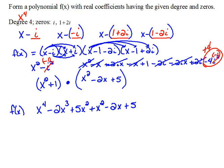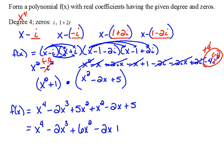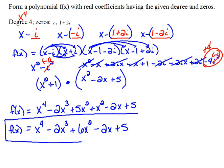We're getting closer to our finished product here. Now we still have to combine like terms. So we would have x to the fourth minus 2x cubed. Our 5x squared plus x squared will combine to give us plus 6x squared minus 2x plus 5. This would be the polynomial that would have these complex zeros, and it is, in fact, a degree 4 polynomial. So we have done that correctly.